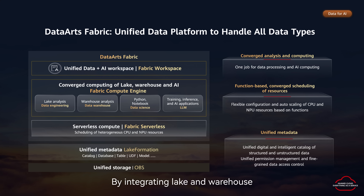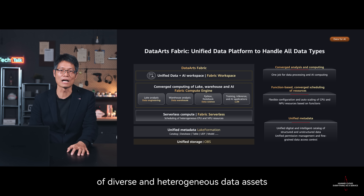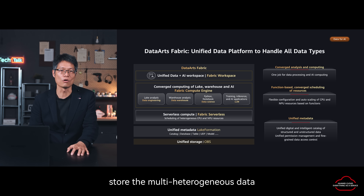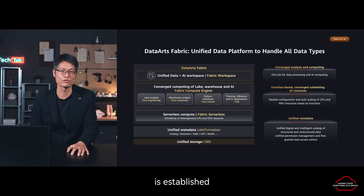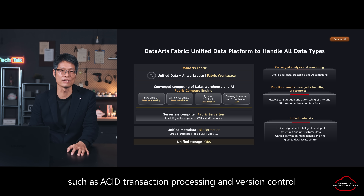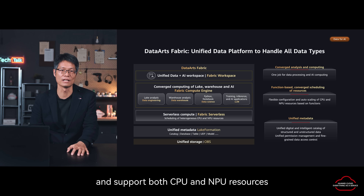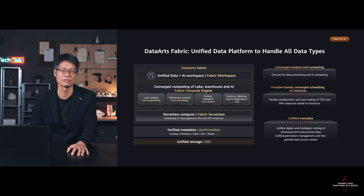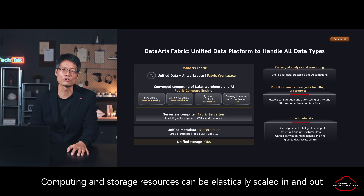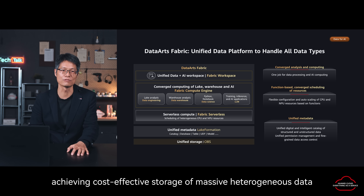By integrating a data lake and a warehouse, Data Fabric has key advantages. First, it implements unified management of diverse and heterogeneous data assets. A standard file format is used to store multiple heterogeneous data in a unified manner, and a metadata layer is established to realize data management functions such as ACID transactional processing and version control. Second, it supports function-based resource scheduling and supports both CPU and NPU resources. Storage and compute separation improves platform flexibility and scalability, with compute and storage resources that can be elastically scaled in and out, achieving cost-efficient storage of massive heterogeneous data.